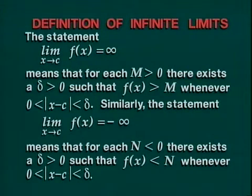the statement, limit of F(x) is negative infinity, means that for each N < 0, there exists a δ > 0 such that F(x) < N whenever the absolute value of x - C is between 0 and δ.